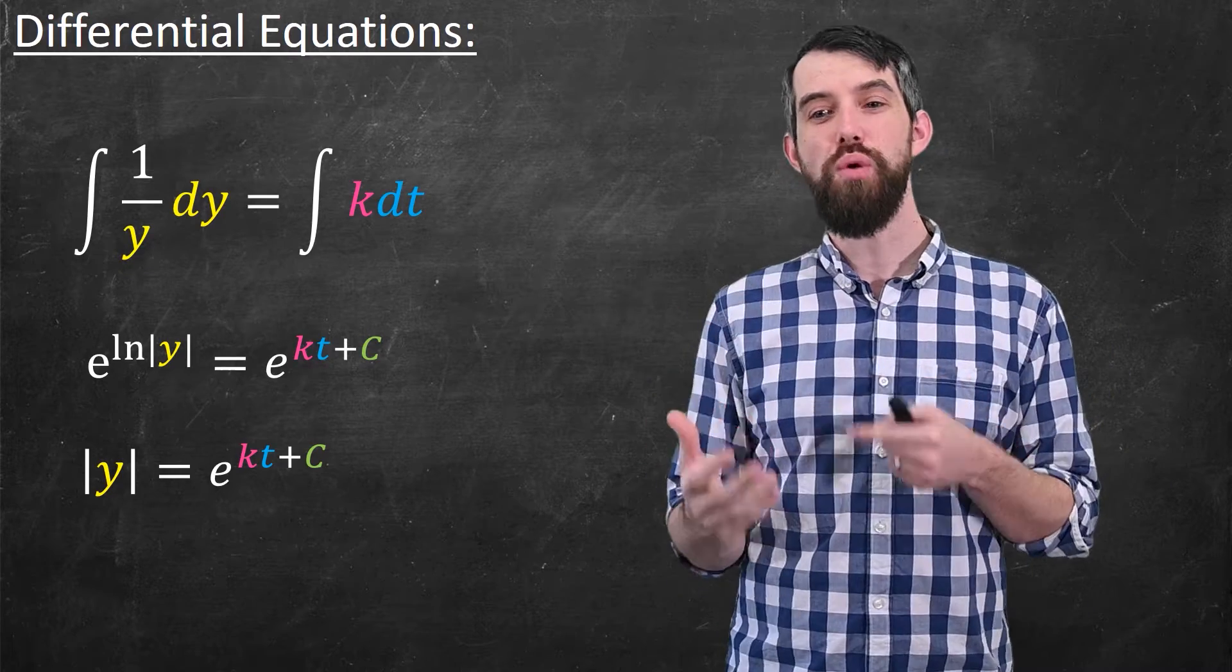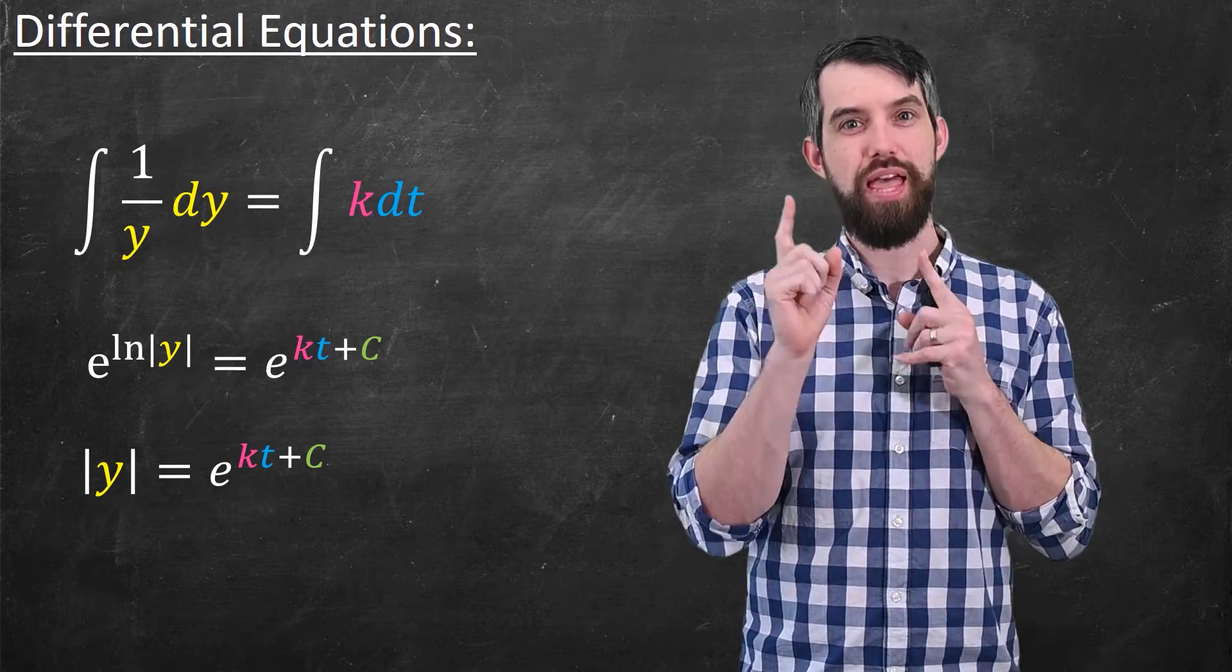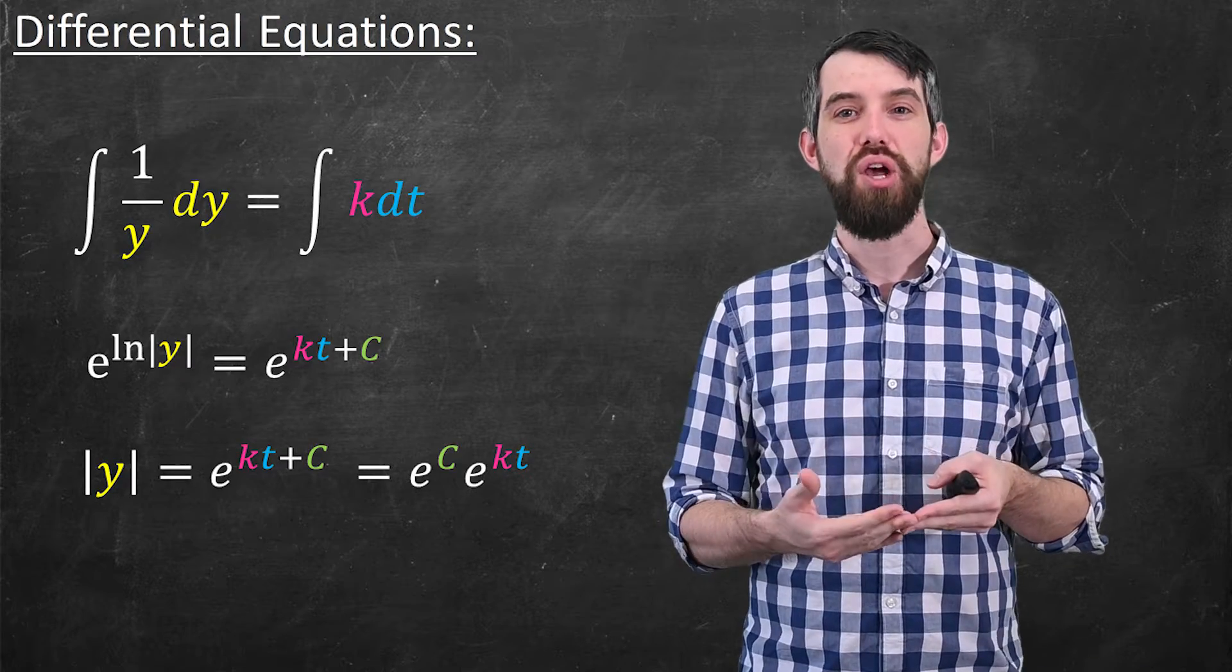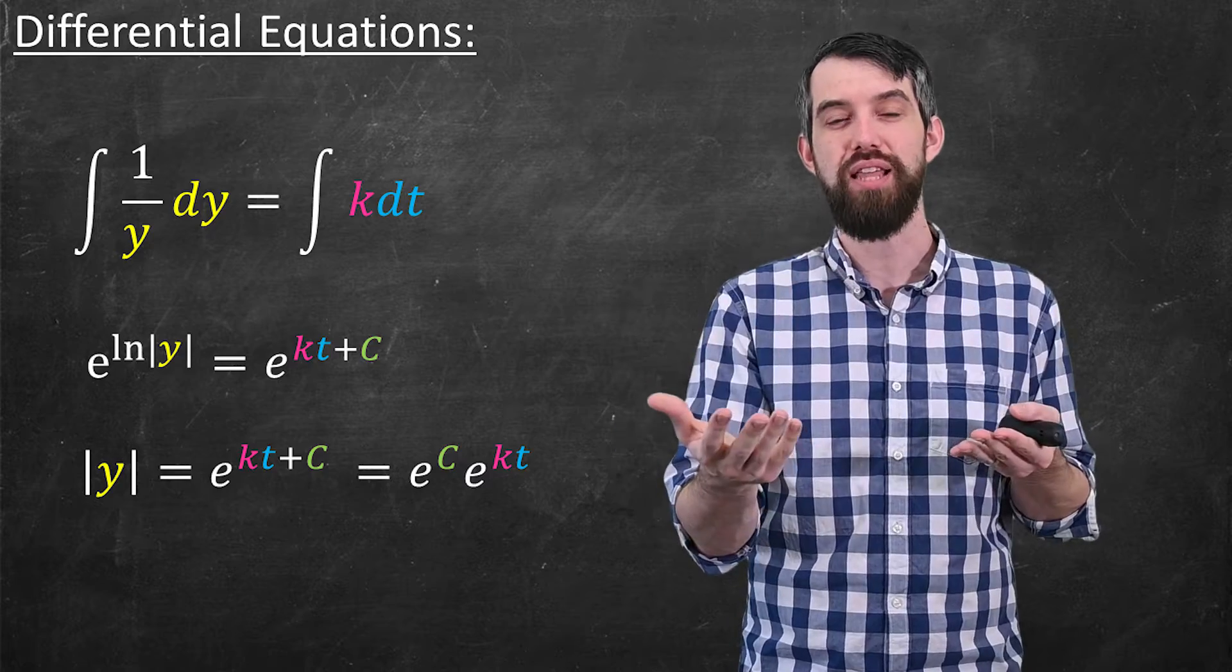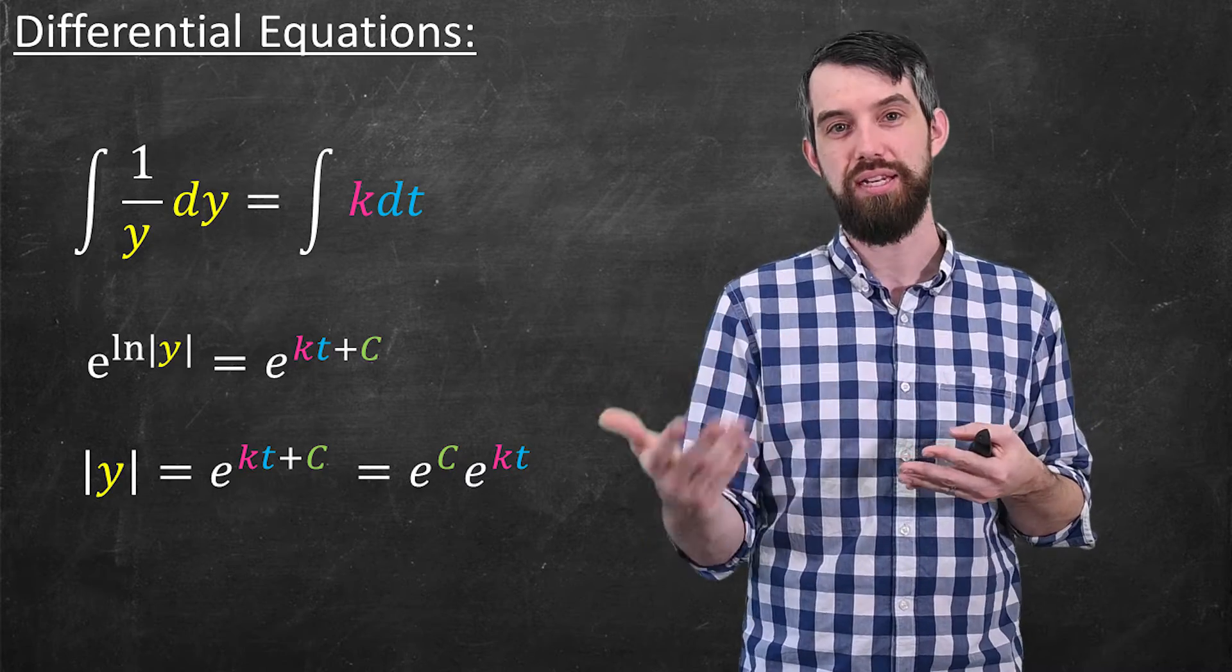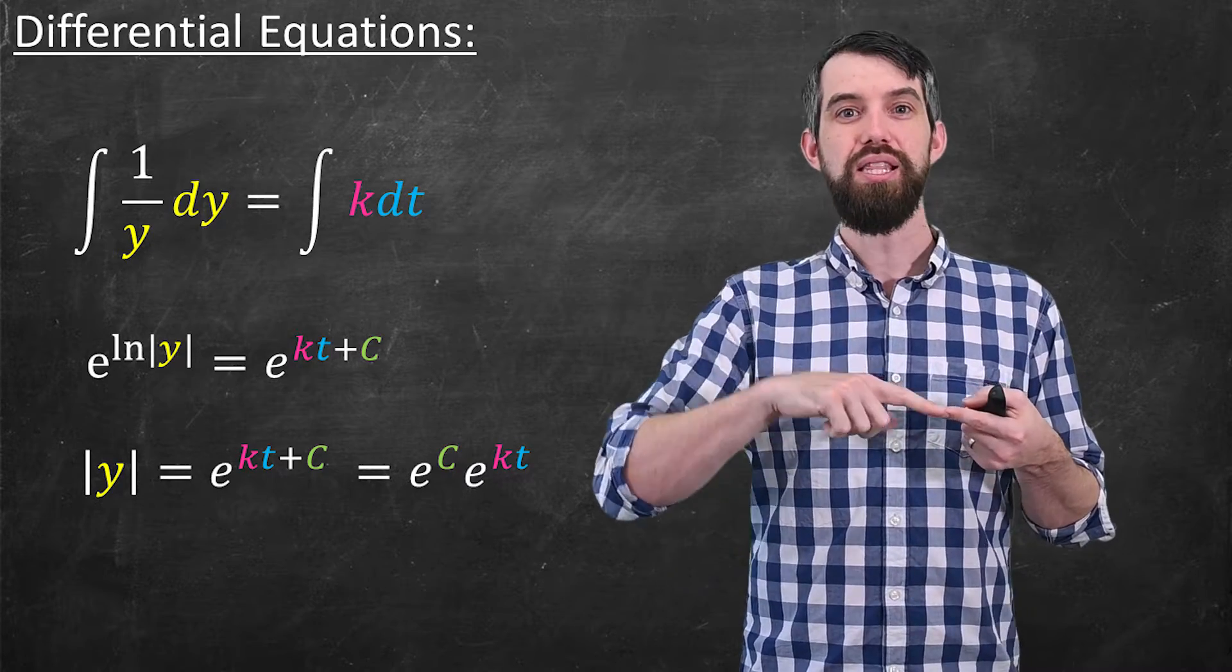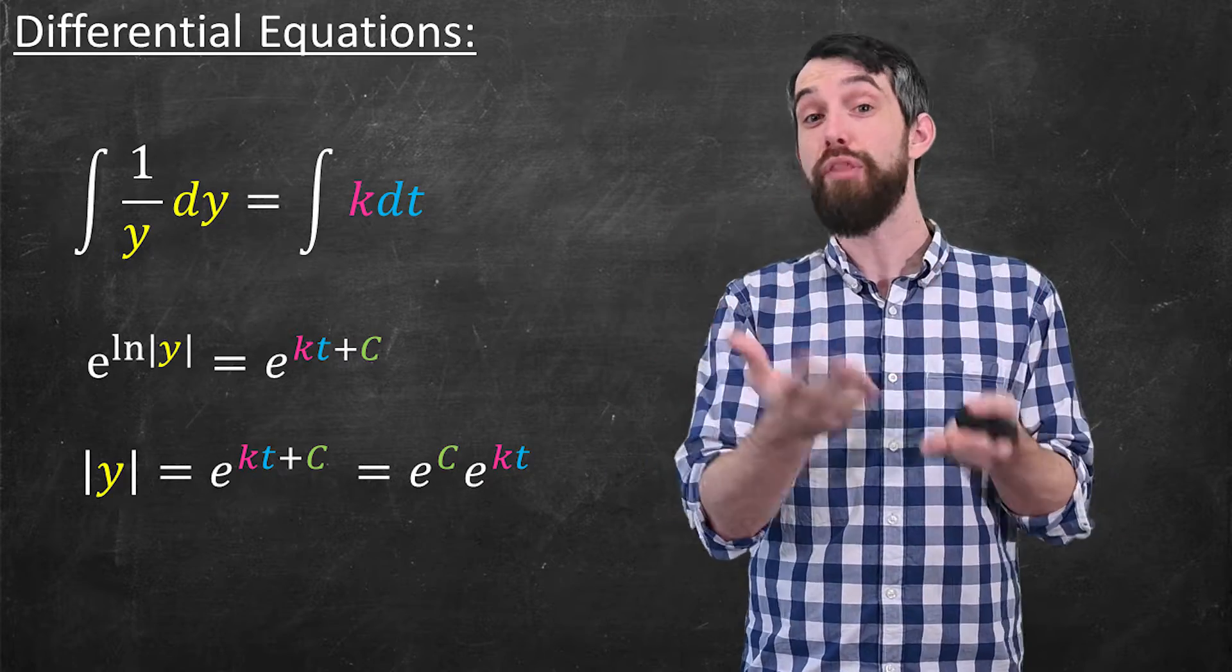And then finally, I'm going to do a little bit of trickery here with that plus c. The first thing I note is that e to the kt plus c, I could separate it and write as an e to the c out the front, and then multiply by the e to the kt. But e to the c is just, well, some other constant.